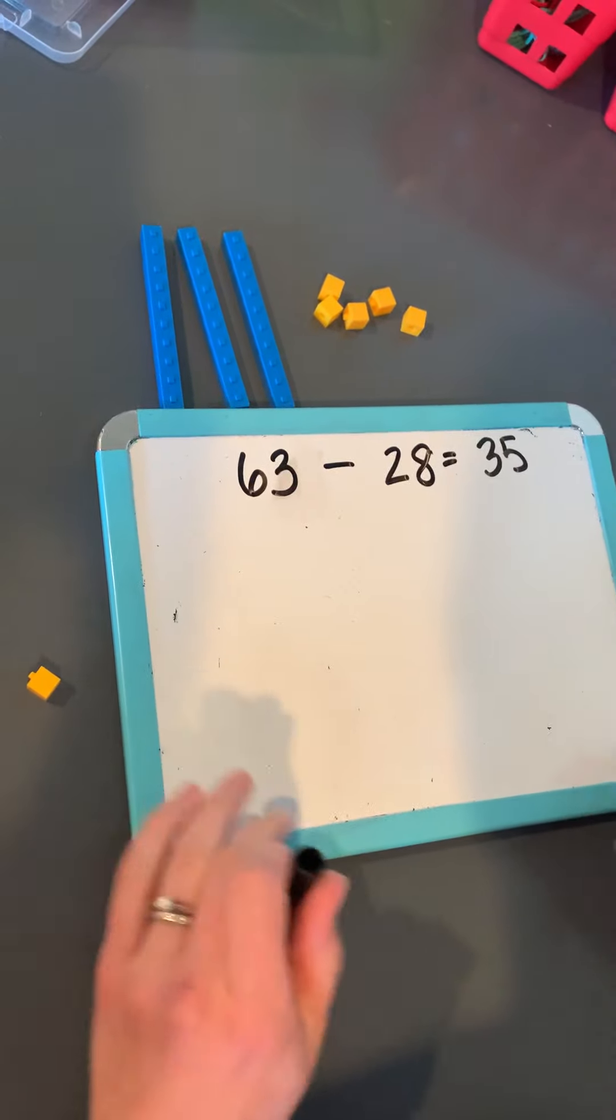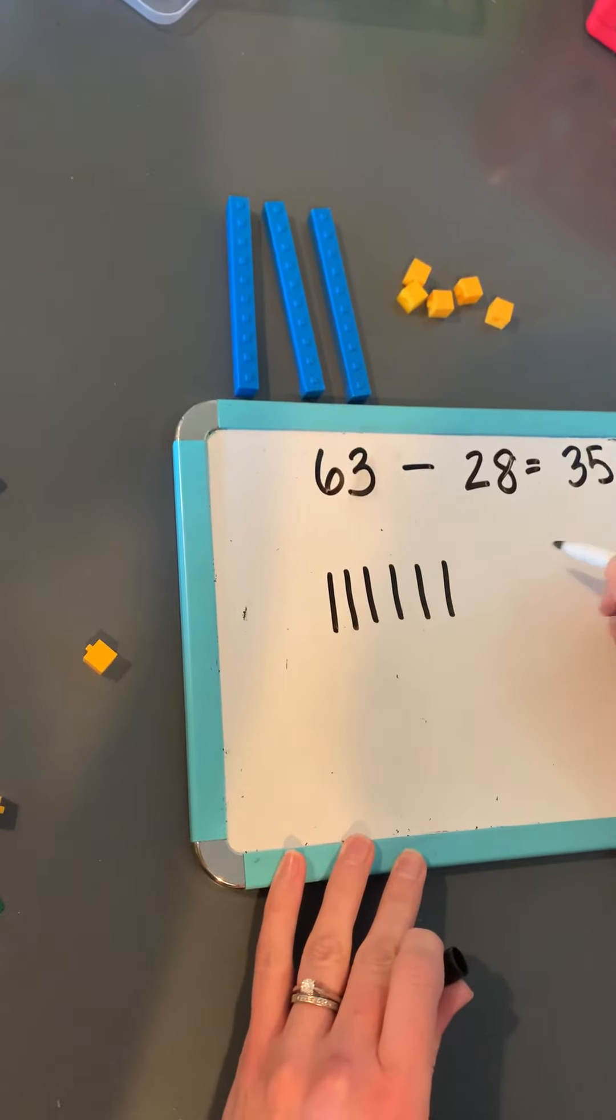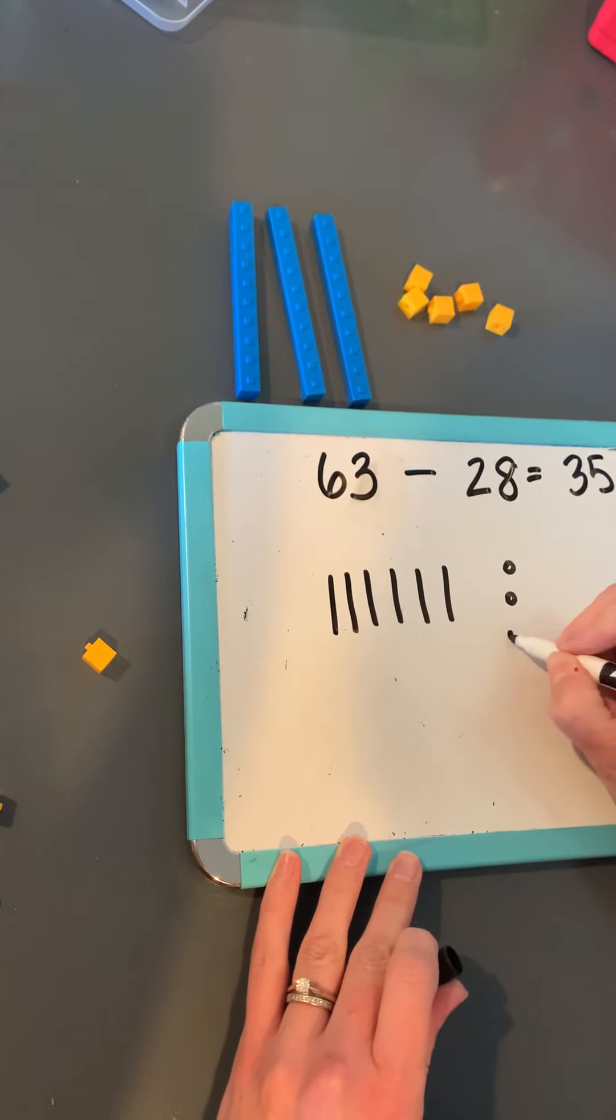So if we did that as a picture, we'd start with 10, 20, 30, 40, 50, 60, 61, 62, 63.